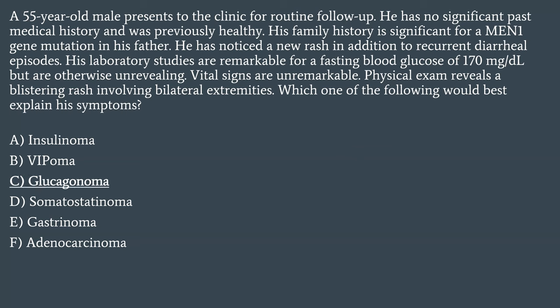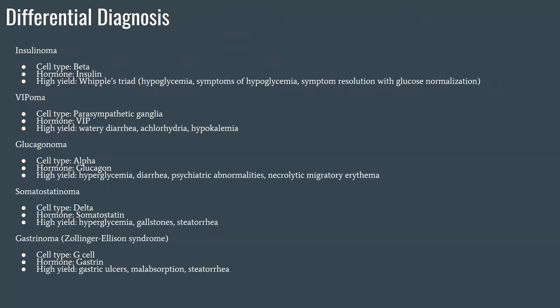The answer for this one was C, glucagonoma. The key points to think about were the MEN1 hint, the new rash, the recurrent diarrheal illness, and the elevated blood glucose. We'll talk through each of these in detail and how you can separate them apart.